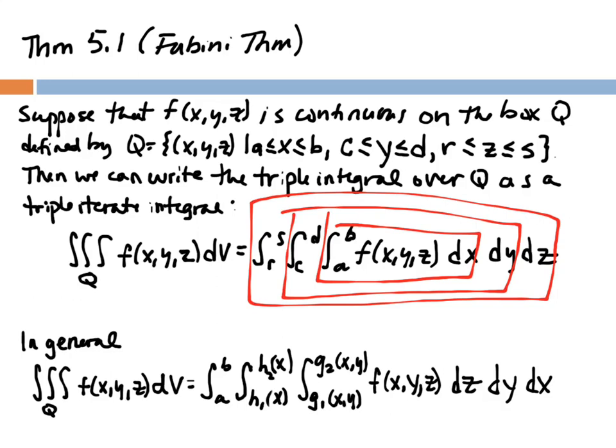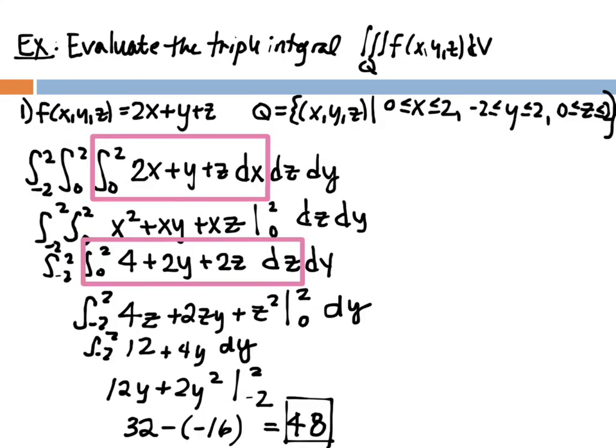Our first example evaluates the triple integral of f(x, y, z) = 2x + y + z over the box Q where x is between 0 and 2, y is between -2 and 2, and z is between 0 and 2. There's no required order, but I like to save the y-integral for last since its lower limit is not 0. Lower limits of 0 with polynomial functions are very friendly because plugging in 0 makes the whole term vanish, so I want to avoid dealing with two non-zero inner limits.